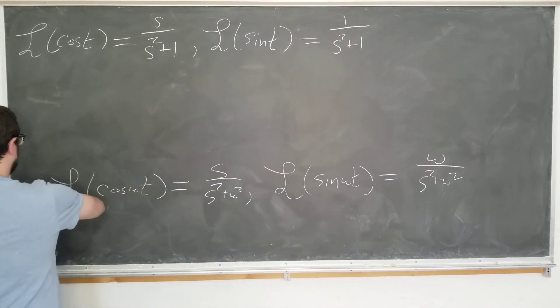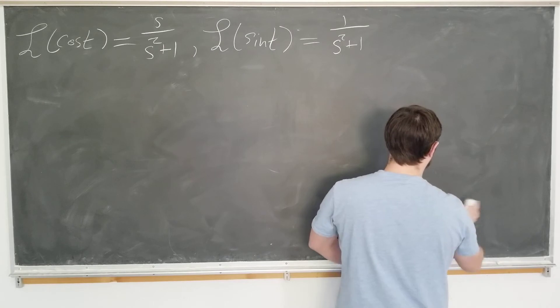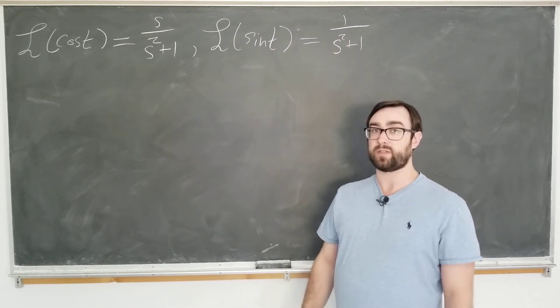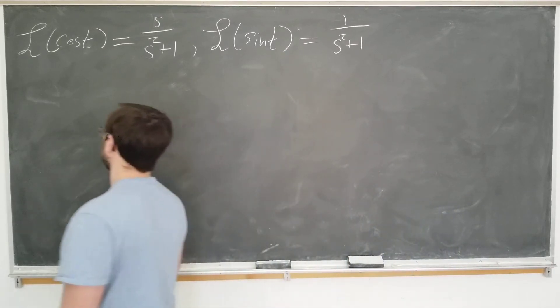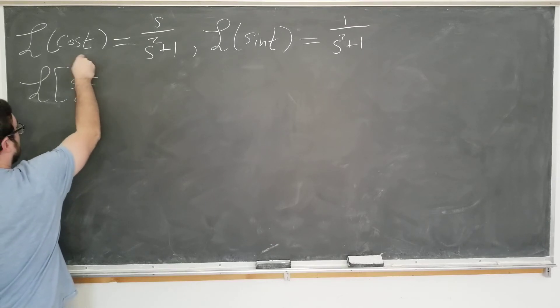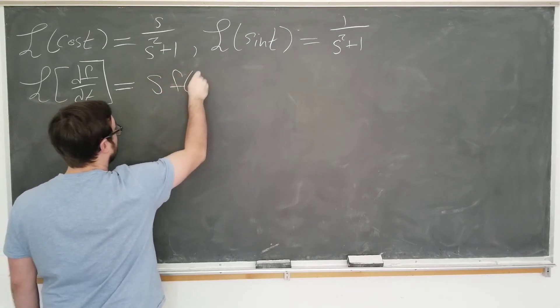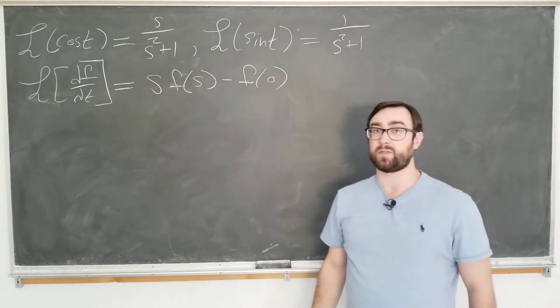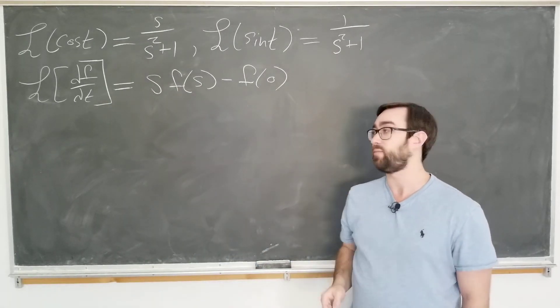Now, how can we use this to prove that the derivative of sine is cosine? Well, we're going to use this fundamental property of the Laplace transform. If you've had a class on differential equations, you would see the Laplace transform in it because of the following identity. We know that the Laplace transform of a derivative is just the new variable multiplying the Laplace transform of the function minus the initial value. So basically, the Laplace transform converts differentiation into multiplication in some sense.